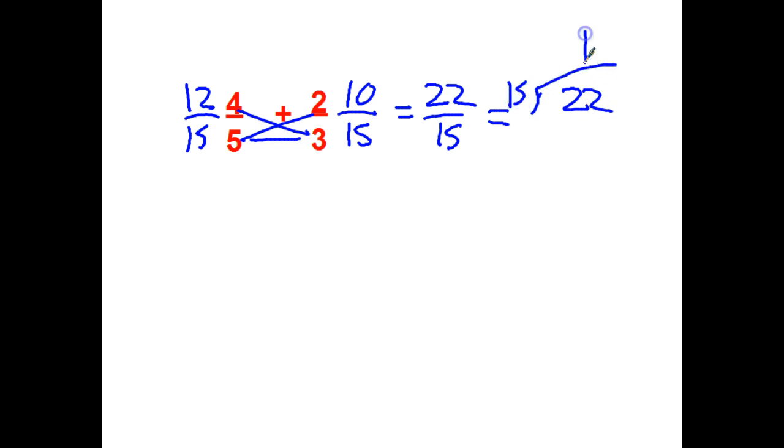Last one. You try it out. 5 times 3 is 15. 4 times 3 is 12. 2 times 5 is 10. 12 fifteenths plus 10 fifteenths equals 22 fifteenths. When I divide, it's going to go one time. 7 left over. 1 and 7 fifteenths. And that's as simple as that would go. They're both odd, but they don't divide by 3, 5, 7 or any other number.